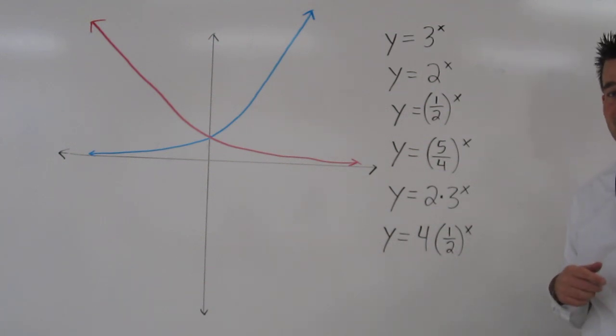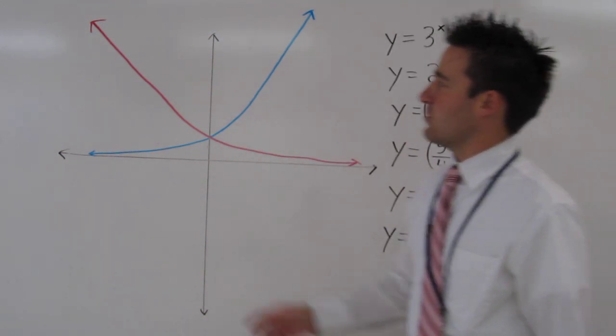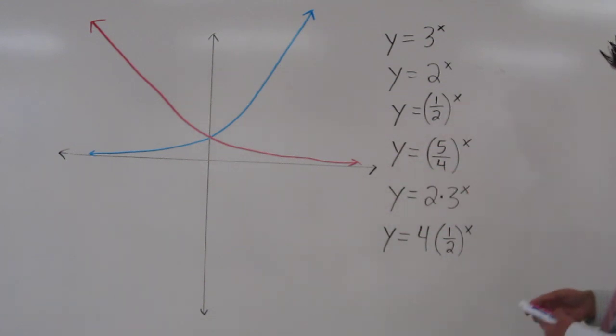If the value is less than 1, it's decay. If it's greater than 1, it's growth. So we're going to go through this list and figure out which of these would be blue-shaped graphs, and which would be red-shaped graphs.